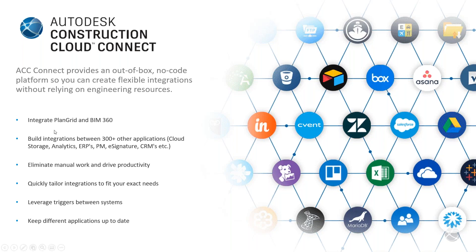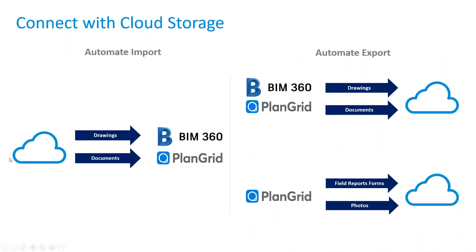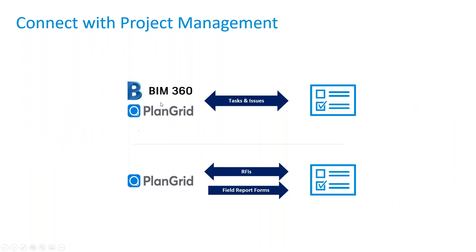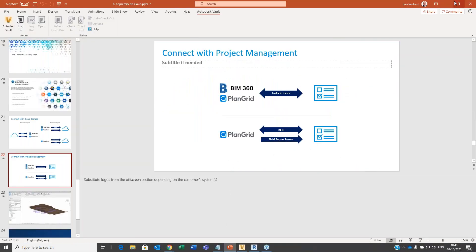ACC Connect recipes can take cloud data and push drawings or documents into BIM 360 or PlanGrid, automate exports from BIM 360 to some cloud solution, or take PlanGrid field reports and photos and push those to any cloud solution. We can also hook tasks and issues from BIM 360 or PlanGrid to a project management system, and the same for RFIs and field reports in PlanGrid. Let me give you an example.